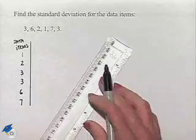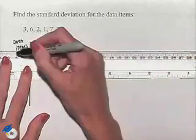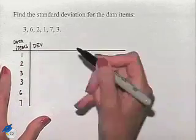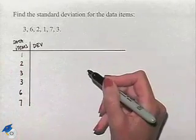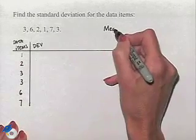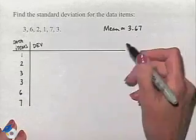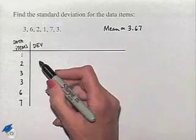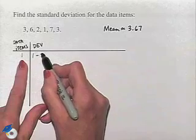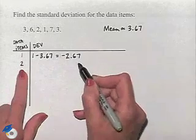In our second column we need to find the deviation from the mean. From a previous problem we determined that the mean is approximately 3.67. In the first row we take 1 minus 3.67 to get a deviation of negative 2.67.